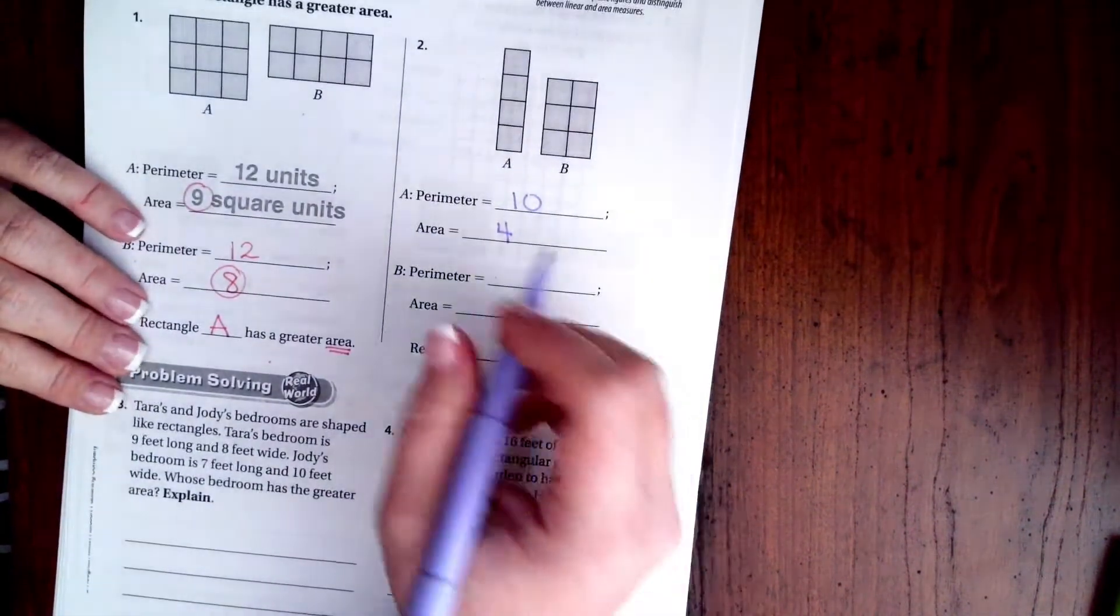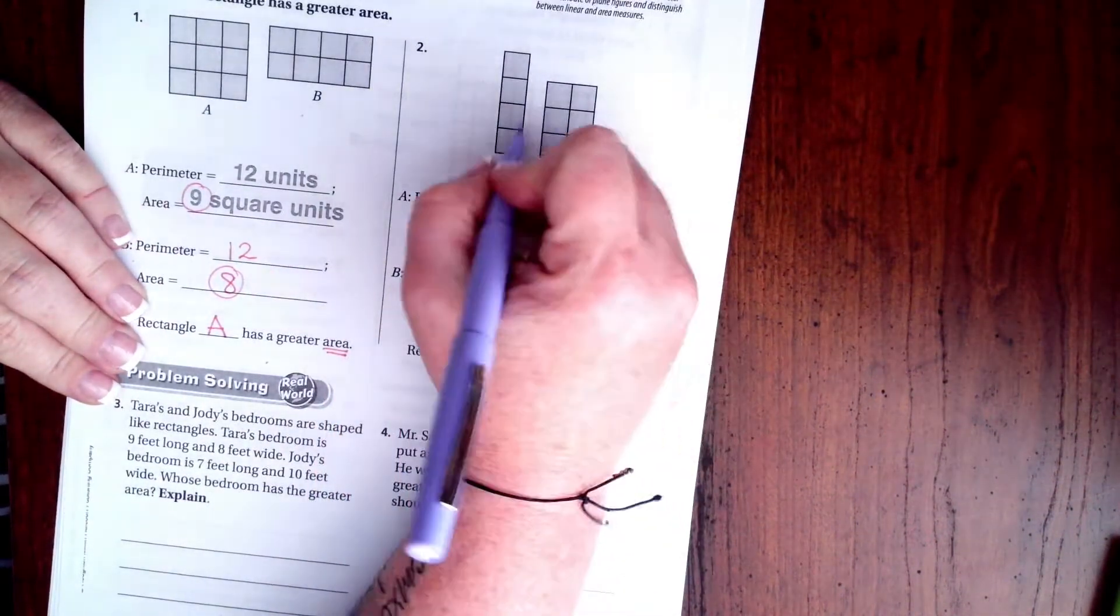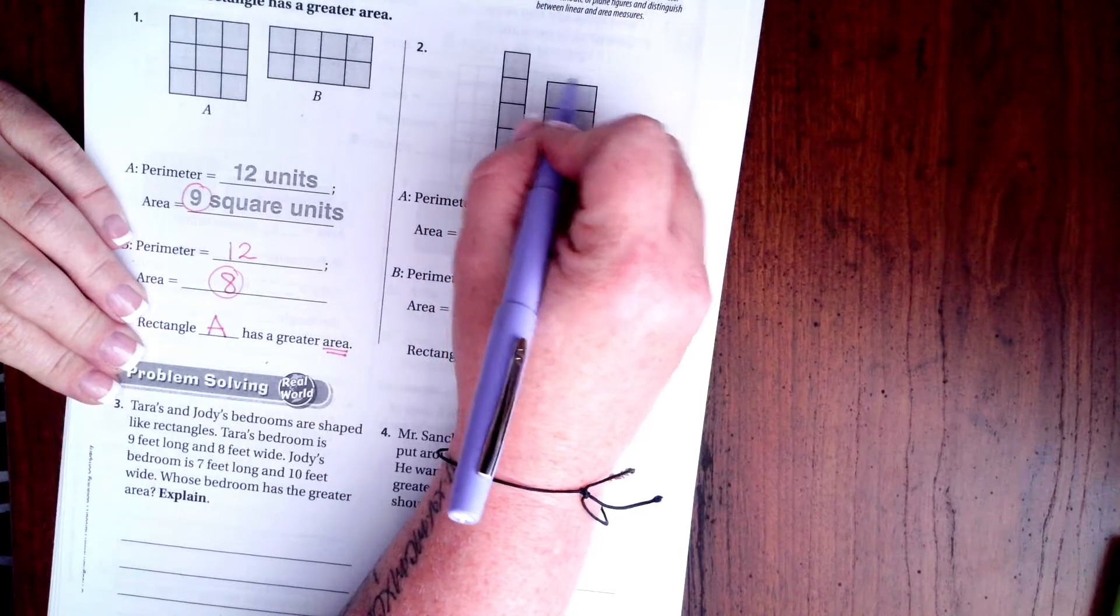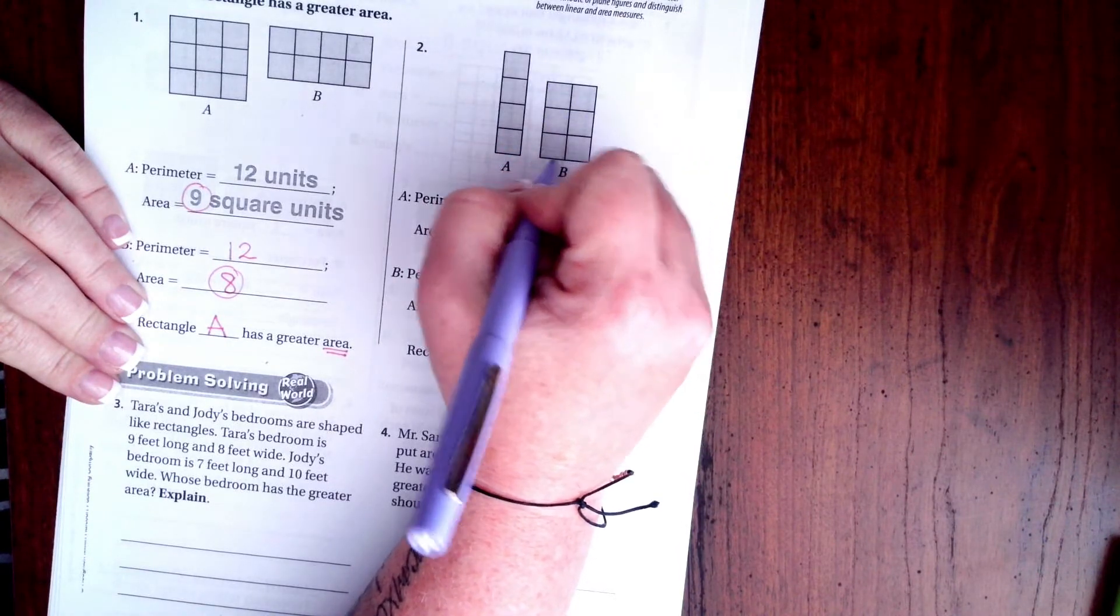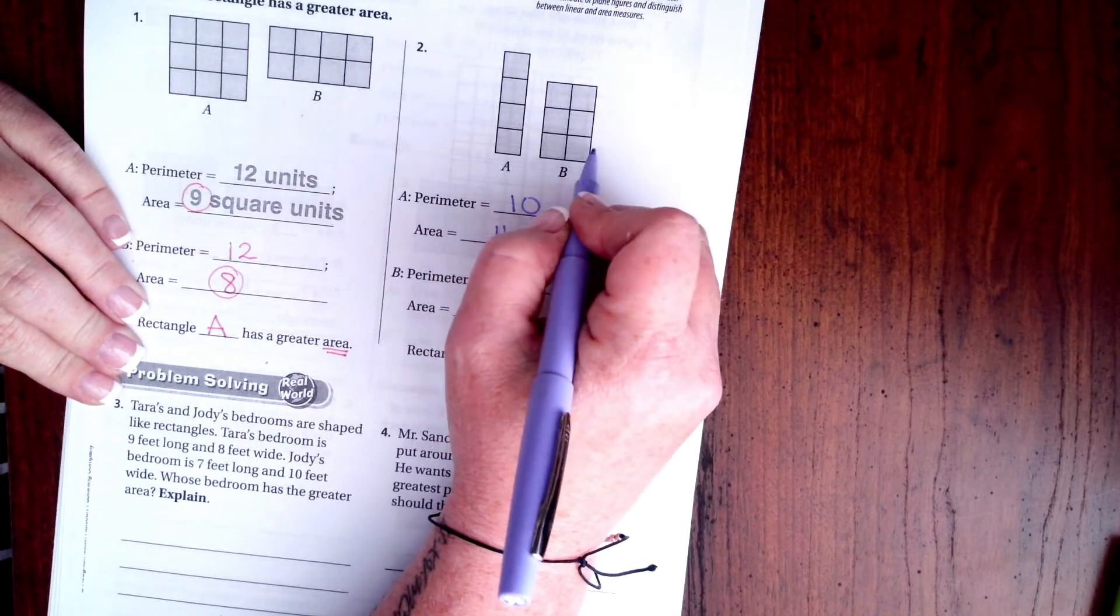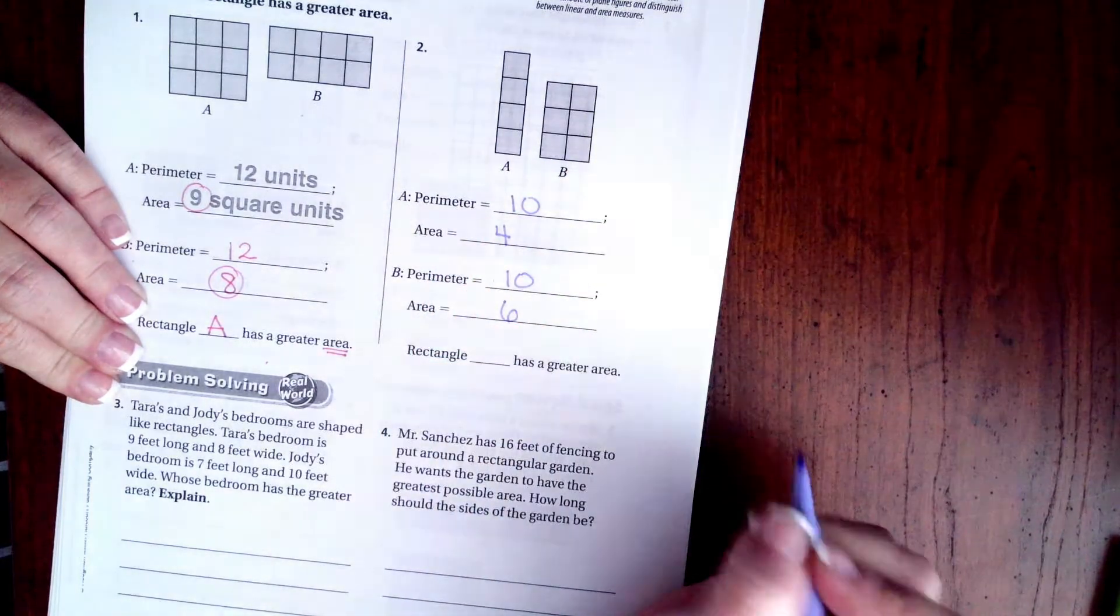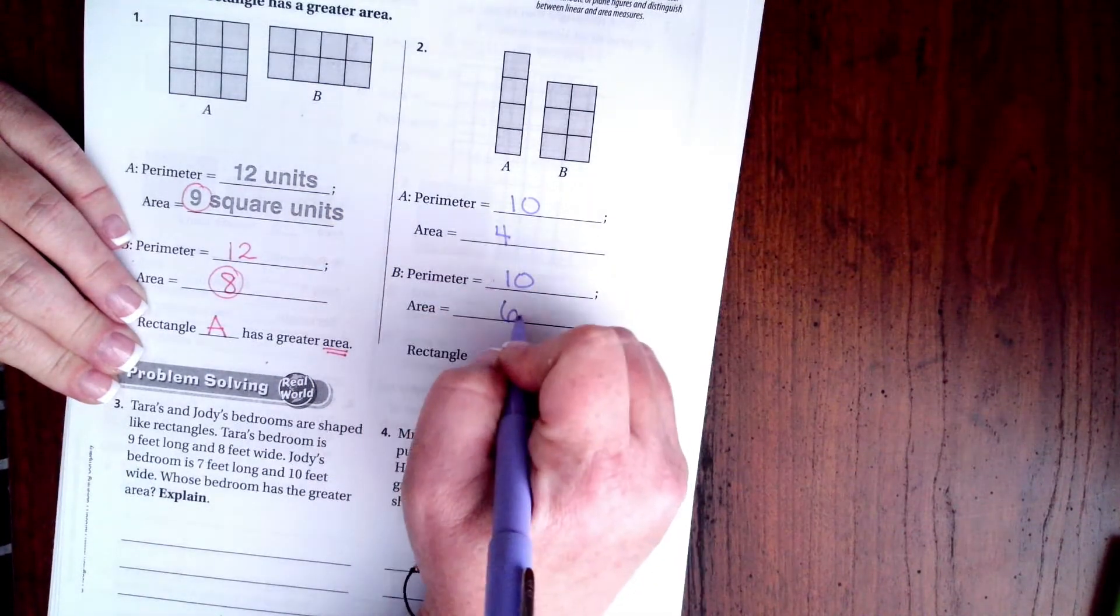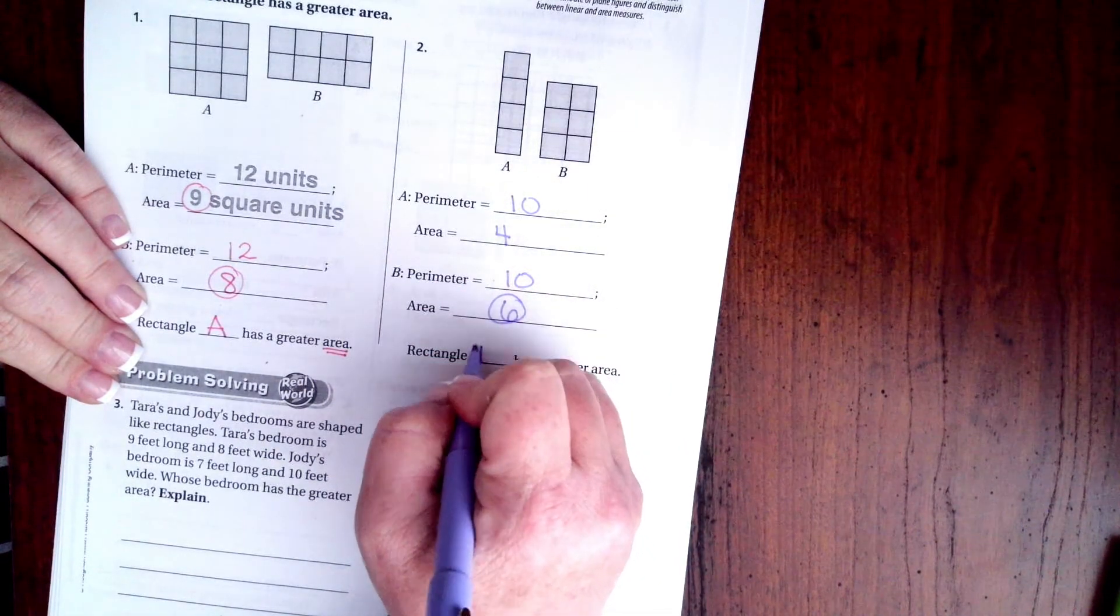The perimeter of B is 1, 2, 3, 4, 5, 6, 7, 8, 9, 10. So, the perimeters are the same, but the area is 1, 2 times 1, 2, 3, which is 6. So, the greater area is B.